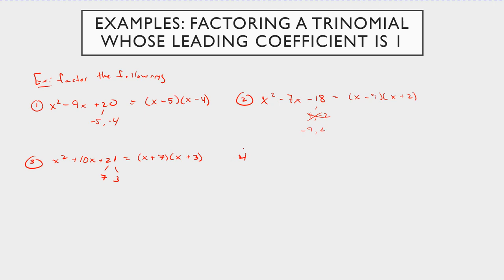Let's look at x squared minus 8x plus 12. Two numbers multiply to positive 12 yet sum to negative 8 — so they both have to be negative. It's going to be negative 6 and negative 2: negative 6 times negative 2 equals positive 12, and negative 6 plus negative 2 equals negative 8. So this factors into x minus 6 times x minus 2.